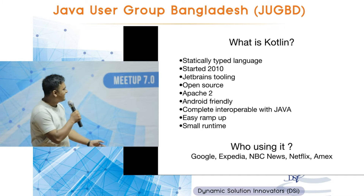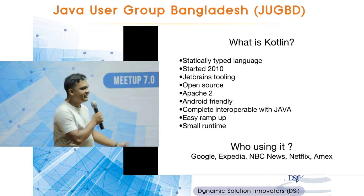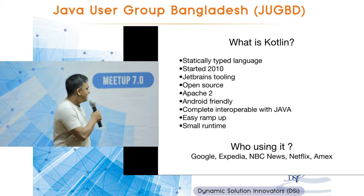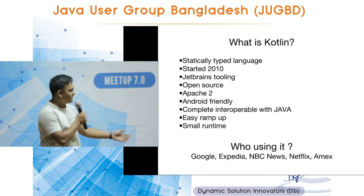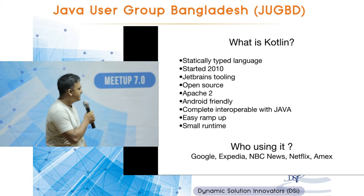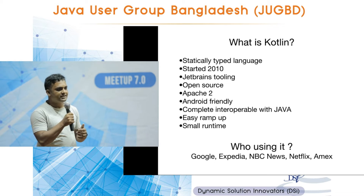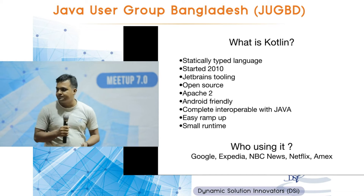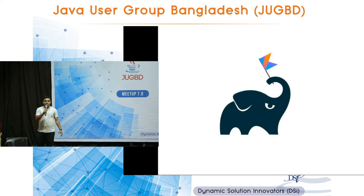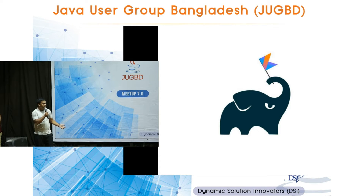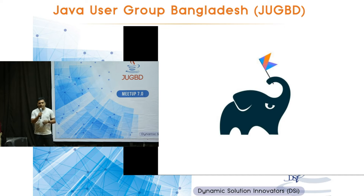So who is using Kotlin? These are some big names — Google, Expedia, NBC News, among others. At Google I/O this year, Google announced they will support Kotlin as their official language for Android development. Another great piece of news: you can write build scripts in Kotlin. It's not fully released yet, still under development, but it should be available soon. Gradle also suggests that all new plugins you write should be written in Kotlin.